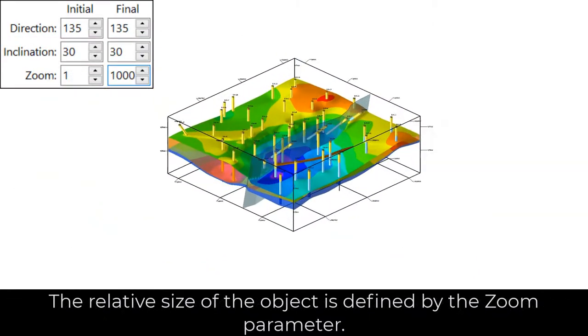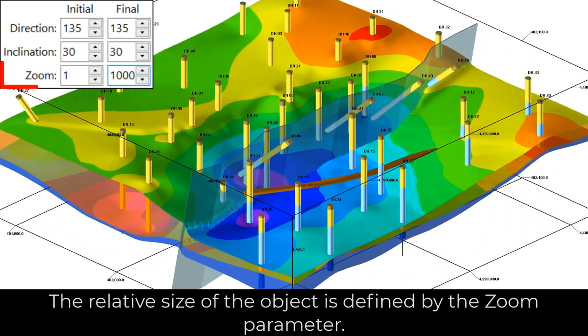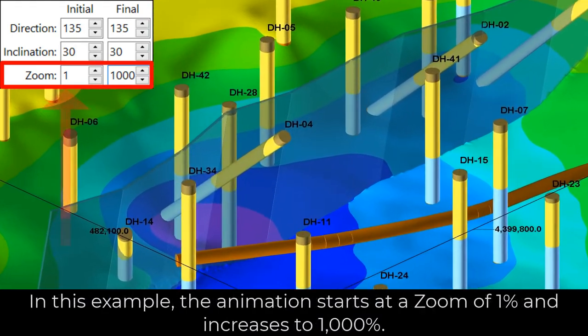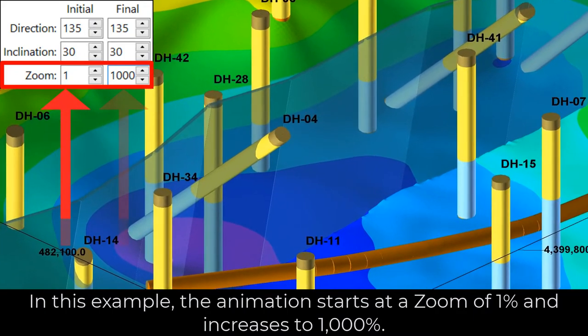The relative size of the object is defined by the zoom parameter. In this example, the animation starts at a zoom of 1% and increases to 1000%.